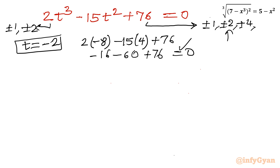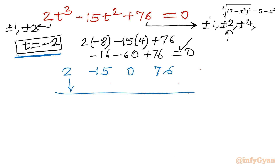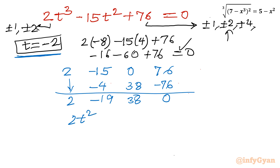Now I can use synthetic division with root minus 2. Writing all coefficients of the cubic: 2, minus 15, 0, 76. Performing synthetic division: 2 stays, minus 2 times 2 gives minus 4 giving minus 19, minus 2 times minus 19 gives 38, minus 2 times 38 gives minus 76, remainder 0. So the resulting quadratic is 2t squared minus 19t plus 38 equal to 0.